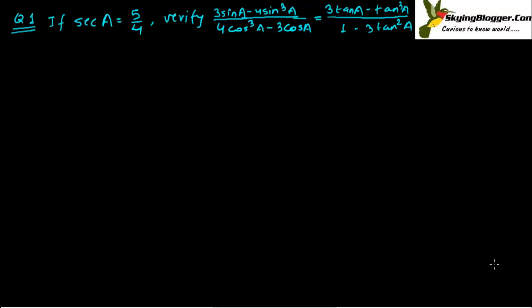Hello, welcome friends once again in another episode of trigonometric ratios. In today's episode we are going to solve this question: if sec A equals 5 upon 4, verify that (3 sin A minus 4 sin³ A) divided by (4 cos³ A minus 3 cos A) equals (3 tan A minus tan³ A) divided by (1 minus 3 tan² A).